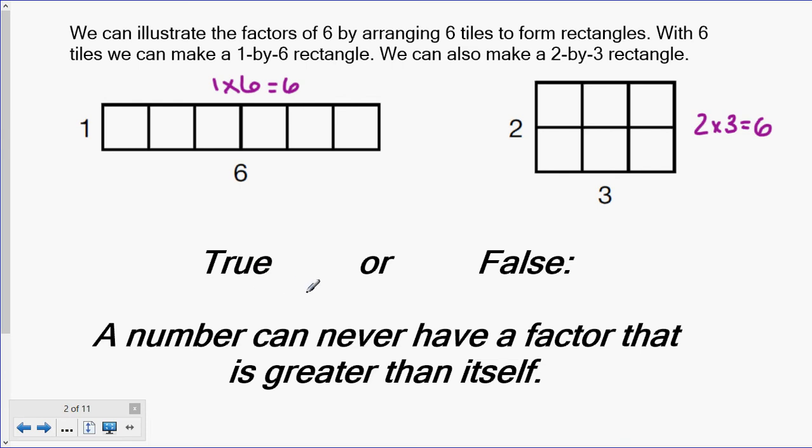Now, true or false, ladies and gentlemen, a number can never have a factor that is greater than itself. The factors of 6 were 1, 2, 3, and 6. Are any of those numbers greater than 6? No, some equal 6, but none are greater than 6. How could you make the product of 6 if you had a number that was greater than 6 as one of the factors? You can never have a factor greater than yourself. So the answer is true.